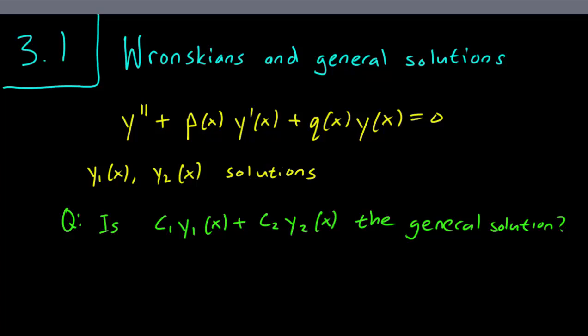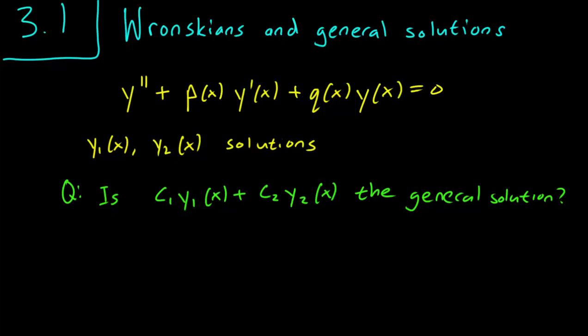By the principle of superposition, we know that c1y1 plus c2y2 is also a solution of this equation. And the question is, is that the general solution? In the previous video, we talked about how we use the Wronskian to figure that out. But let me explain here why that method worked.